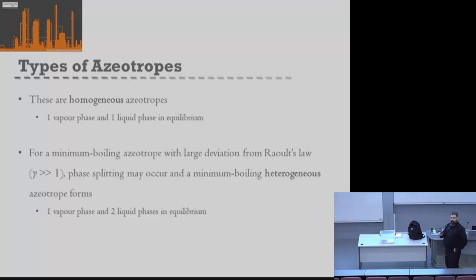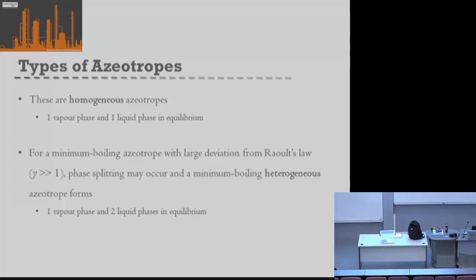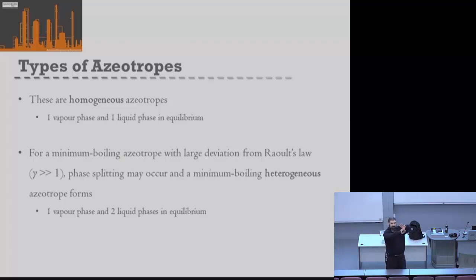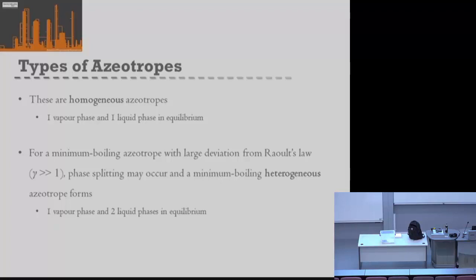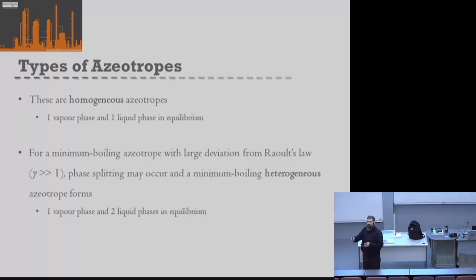These two different types of azeotropes — maximum and minimum boiling — are called homogeneous azeotropes, because we have one vapour phase and one liquid phase in equilibrium. But if we've got a very large deviation from Raoult's law, or our activity coefficient is much larger than 1, then we may get phase splitting. Just as in liquid-liquid extraction, if our two liquids really didn't like each other — very high activity coefficients or very different solubility parameters — they would separate into two liquid phases.